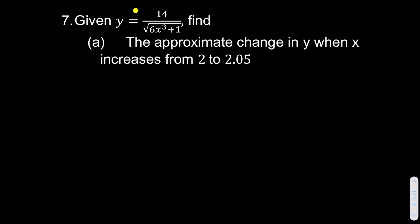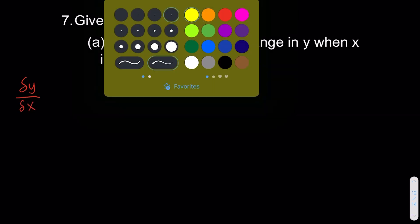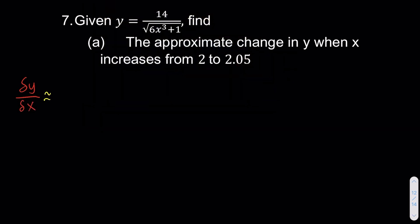In these questions, they say that y is equal to relevant to these functions. Find the approximate change in y when x increases from 2 to 2.01. So since this is dealing with a small change, we know we're going to use the equation delta y over delta x, which can be found using the approximation from the differentiation, which is dy over dx.